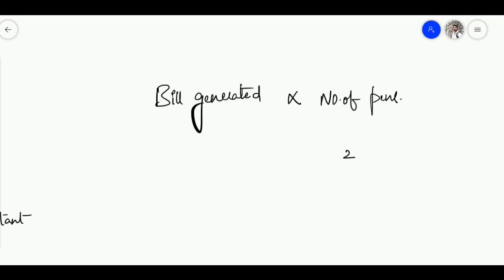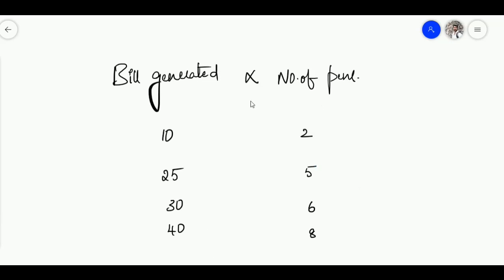For example: 2 pens gives a bill of 10, 5 pens gives 25, 6 pens gives 30, and 8 pens gives 40. But we can't write 10 proportional to 2, or 25 proportional to 5 — there is no sense in this representation. What exactly can we understand from '10 proportional to 2'? It becomes more meaningful if we use an equals sign.